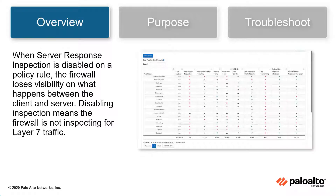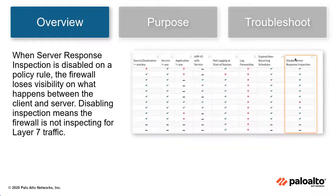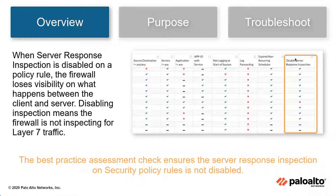When server response inspection is disabled, the firewall loses visibility on what happens between the client and the server. Disabling inspection means the firewall is not inspecting for Layer 7 traffic, which includes application and threat activity. The Disable Server Response Inspection column checks to ensure server response inspection on security policy rules is not disabled.